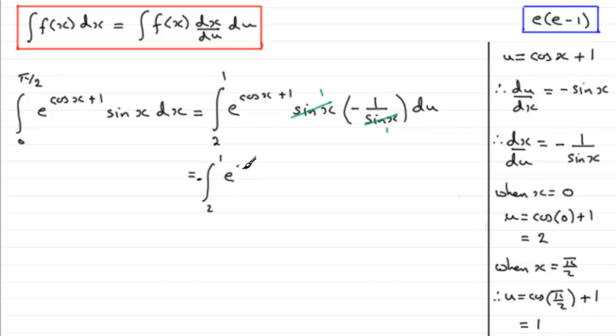Then you've got just simply e to the u integrated with respect to u. Now we know what the integral of e to the u is—it is e to the u. So therefore we're going to get minus e to the u, and that's going from 2 to 1.